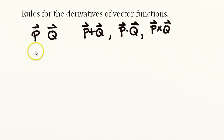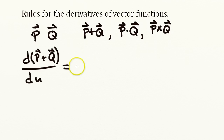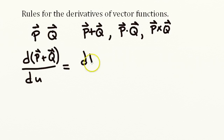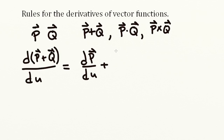First, let's look at the sum. Taking the derivative of the sum of two vectors is straightforward — we just take the derivative of the first vector and add it to the derivative of the second vector.